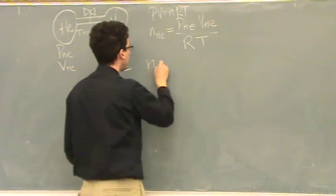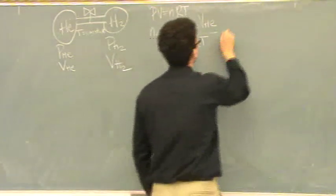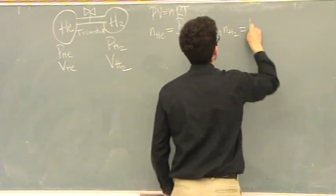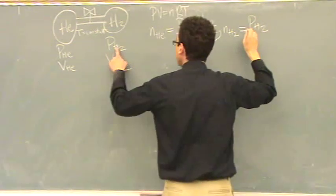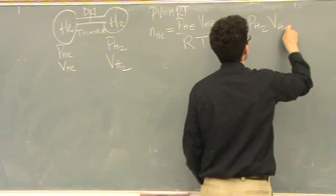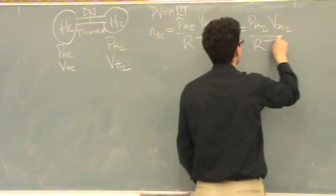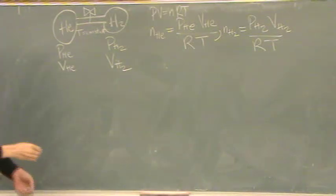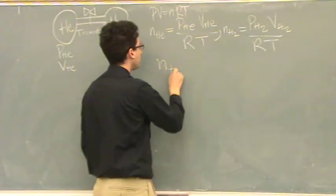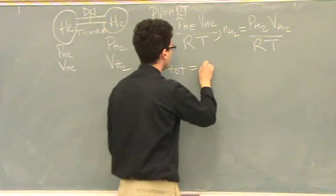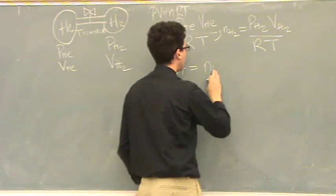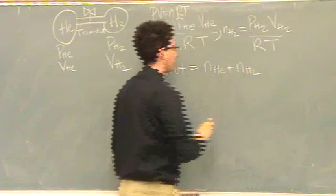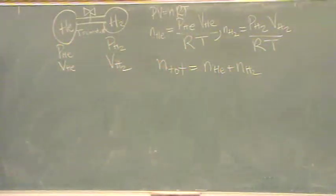I can also find the moles of hydrogen. Moles of hydrogen is equal to pressure of hydrogen, that's given, times the volume of hydrogen, that's given, over RT, and those are both constants. This allows me to find the total moles, and this gets into Dalton's law. It's the moles of hydrogen plus the moles of helium. Sum of those is total moles.